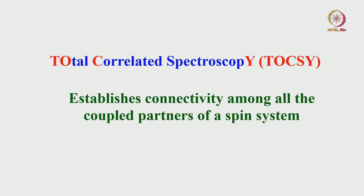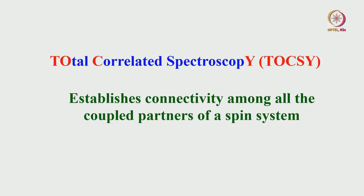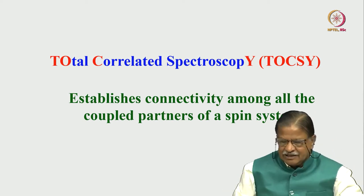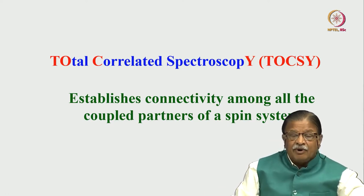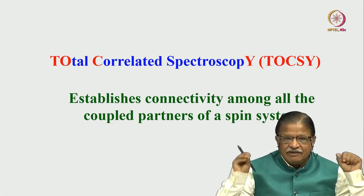Today we will go further with another topic called Total Correlation Spectroscopy, called TOCSY. In simple terms, TOCSY establishes connectivity among all the coupled partners of a given spin system. In COSY, we established correlation among immediate coupled partners — one coupled to the next one, next one, and so on, going in a ladder manner. Whereas in TOCSY, it establishes connectivity among all the coupled partners of a given spin system at once.